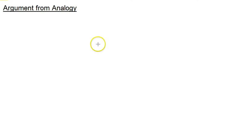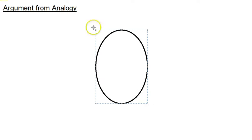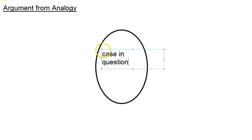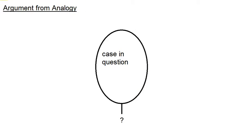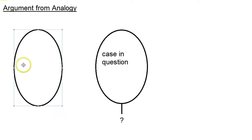Argument from analogy is going to be a little more familiar than inference to the best explanation. There are some basic moving parts here. There's what I'm going to call the case in question, and we're trying to get a conclusion about what's going on in this case — whether it has a certain property or not. In order to get straight on this, we're going to draw an analogy with some other case or cases.